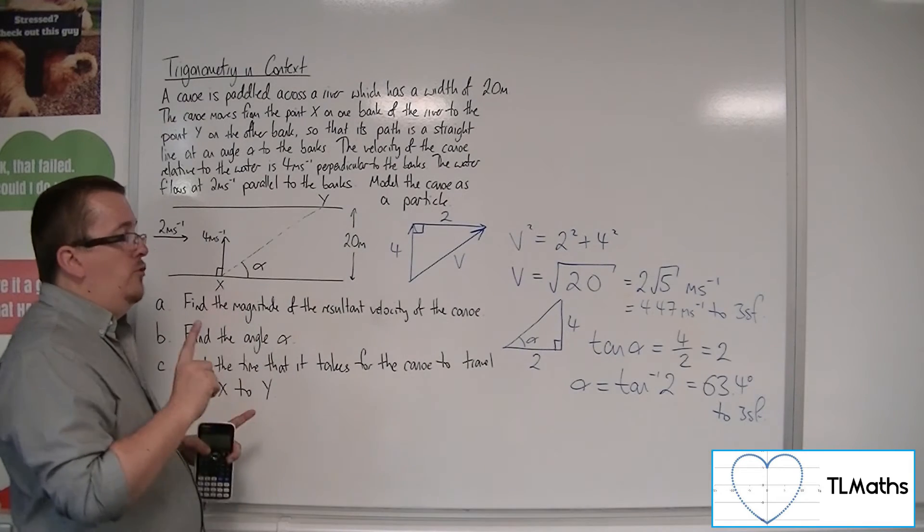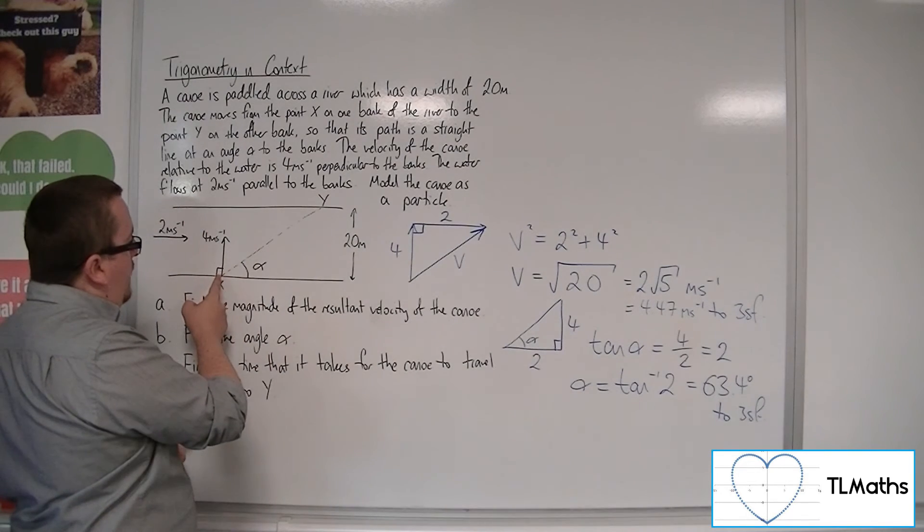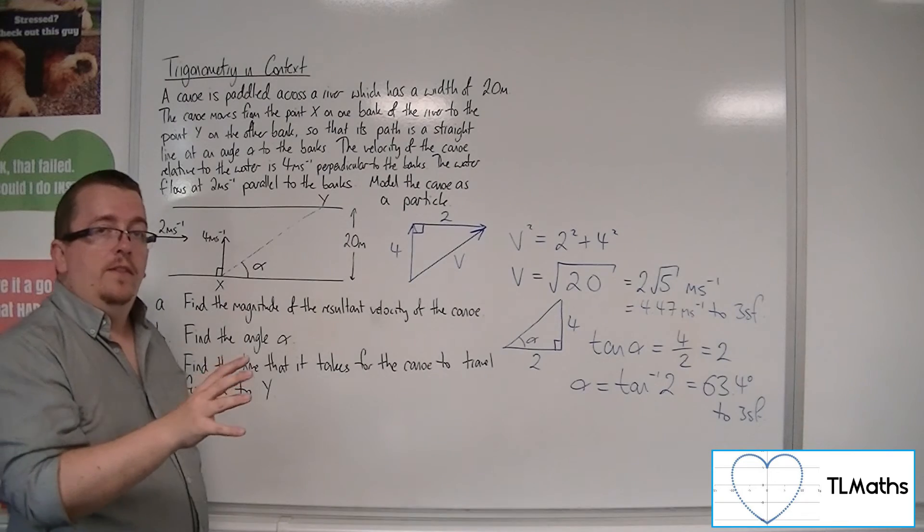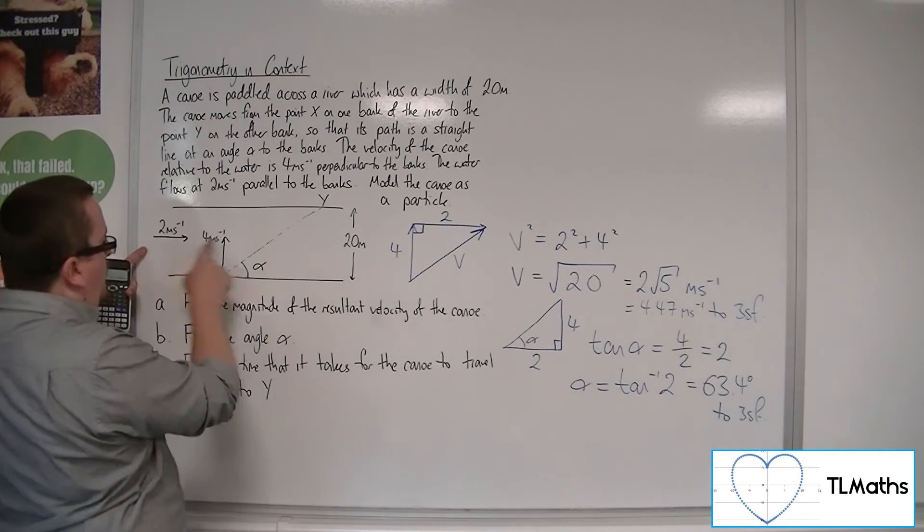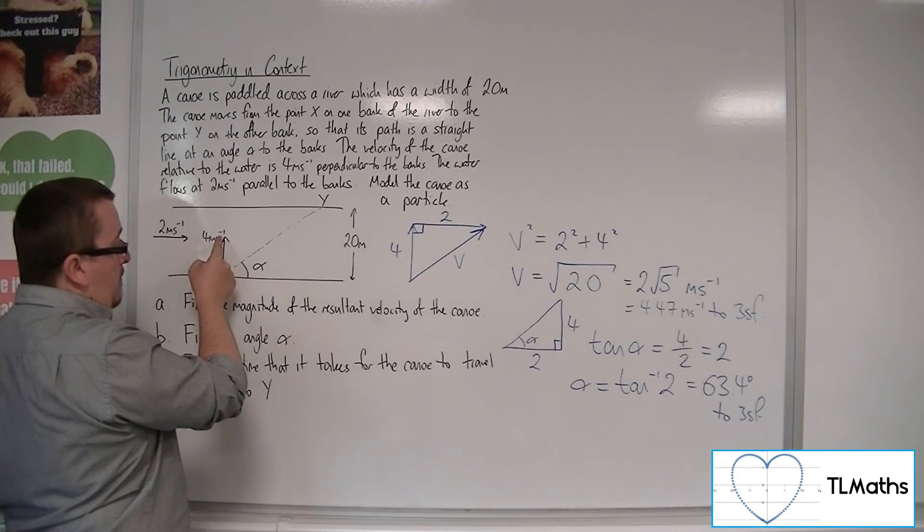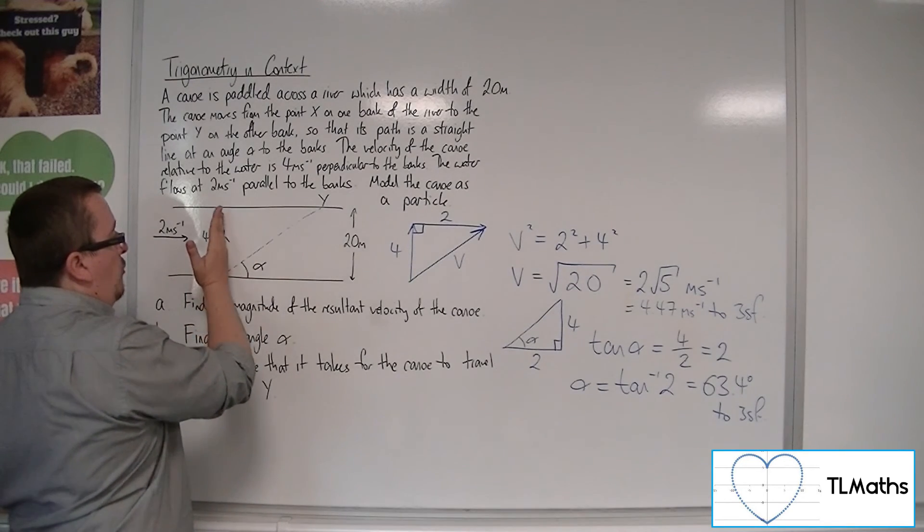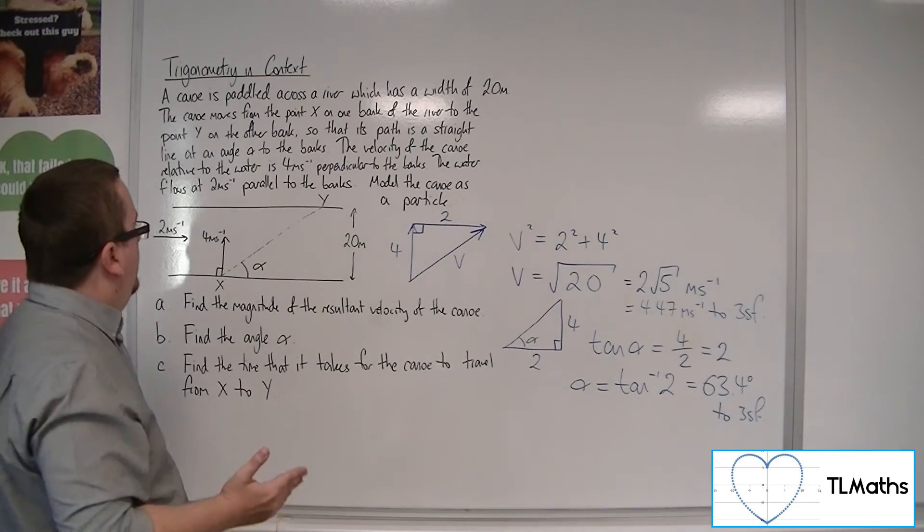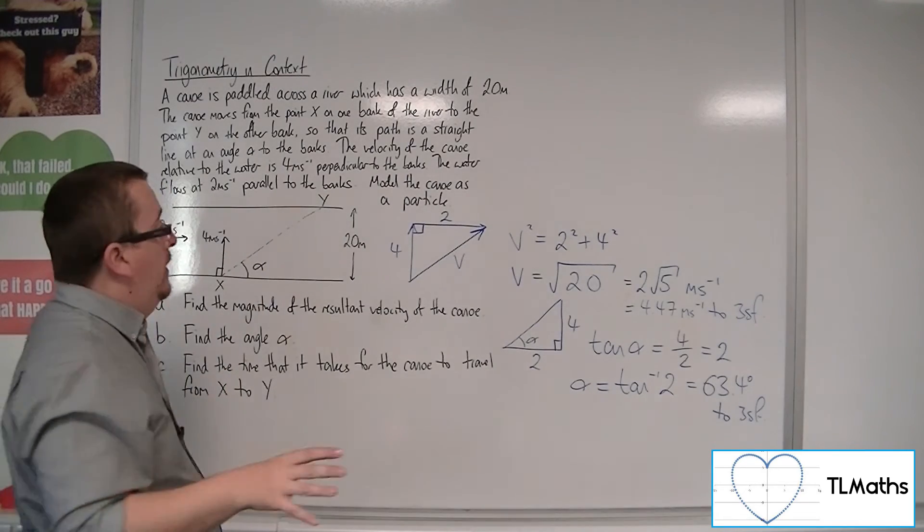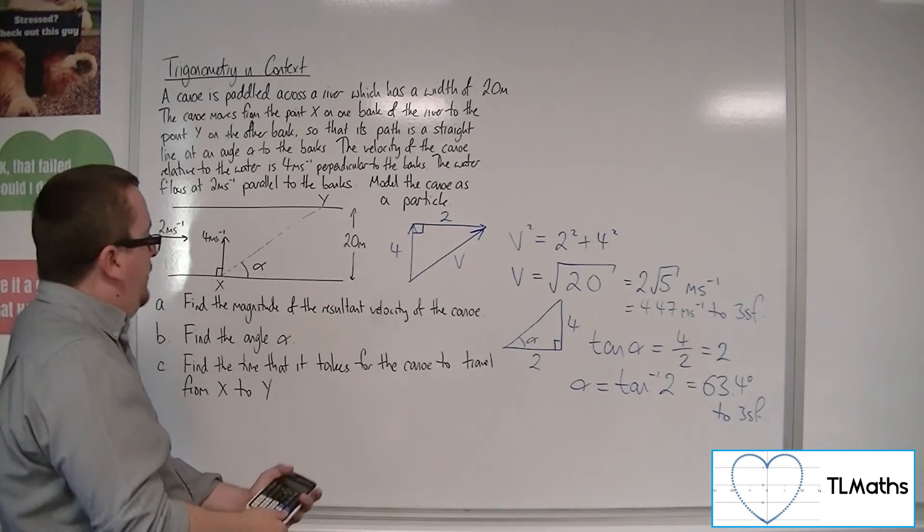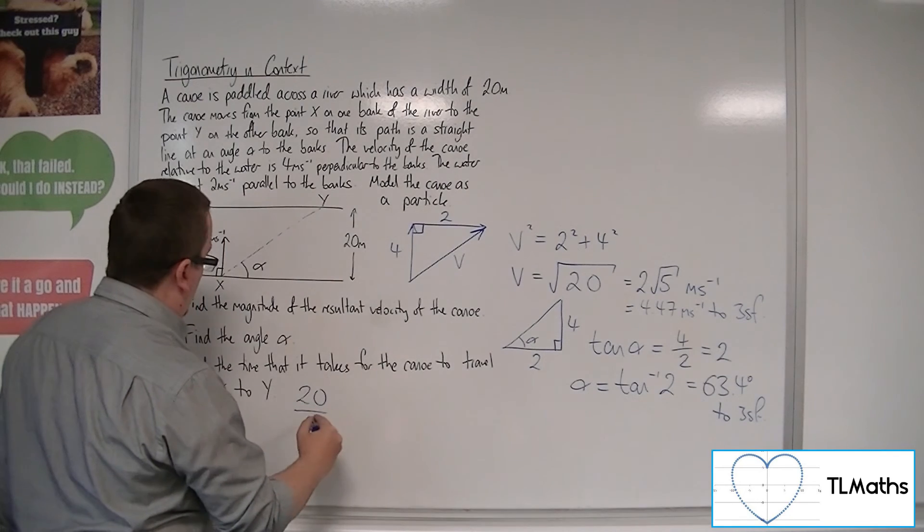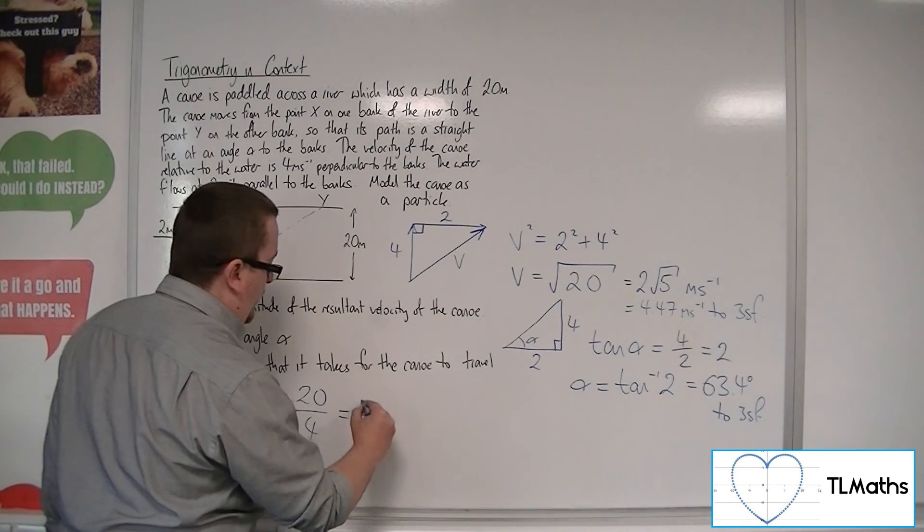However, what you should also recognize is the fact that your canoe is traveling at 4 meters per second in that direction perpendicular to the bank. Now, the only thing that is resisting it and hindering it is coming parallel to the bank at 2 meters per second. So, although your canoe is being pushed to the right, it's still traveling at 4 meters per second in that direction. So, there's nothing actually hindering it in that direction, pushing against it. So, that means that it's still going to be traveling the 20 meters at 4 meters per second. So, the actual time is the distance divided by the speed. So, 20 over 4, this will be your time. So, it's just 5 seconds.